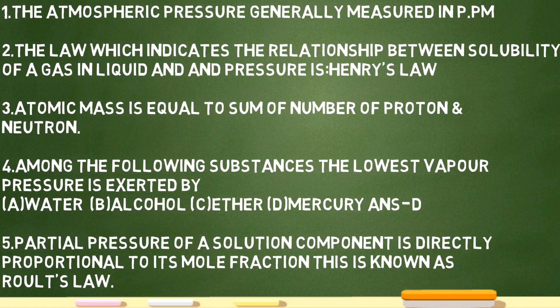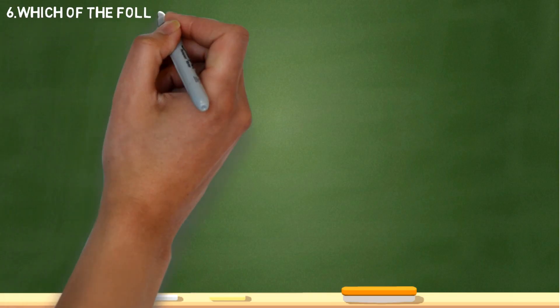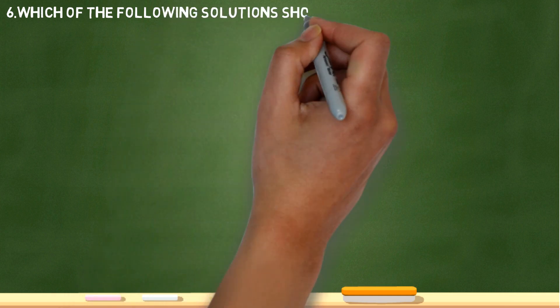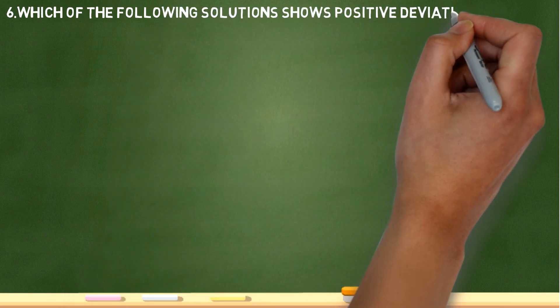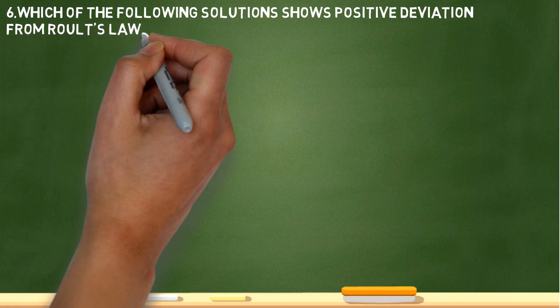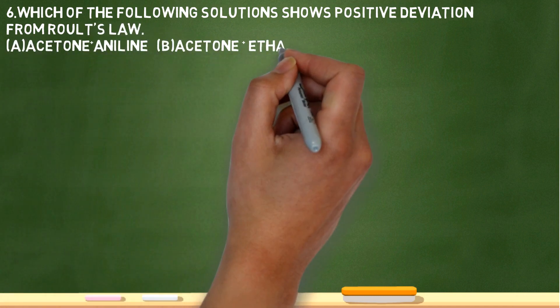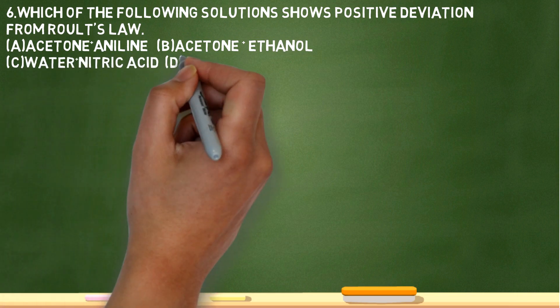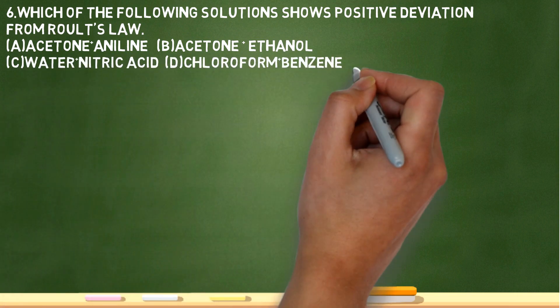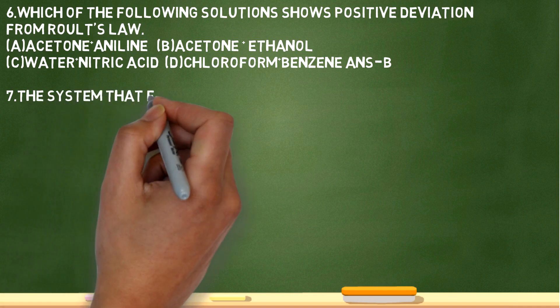Which of the following solutions show positive deviation from Raoult's law? Answer is acetone plus ethanol. Question eleven: the system that forms maximum boiling azeotrope is acetone plus chloroform.